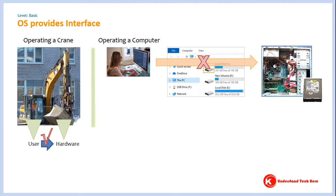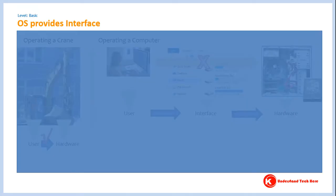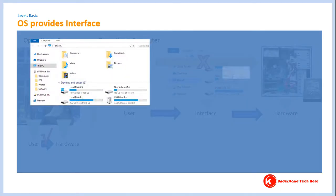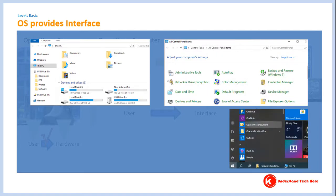In a computer, the user clicks on graphical elements, which we call interface. Clicking on the interface causes hardware to spring into action, so in a computer there is an indirect interaction between user and hardware. Things like icons and graphical elements, clicking on which causes hardware to spring into action, are collectively called the interface. Since everything in this type of interface has a graphical element, it is called a graphical interface, or GUI in short.